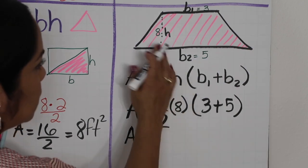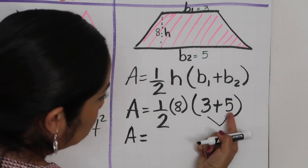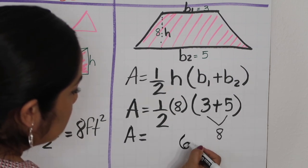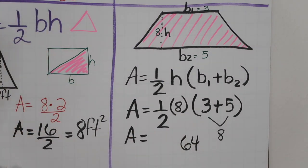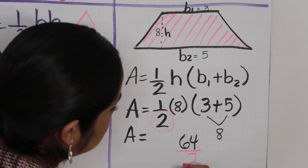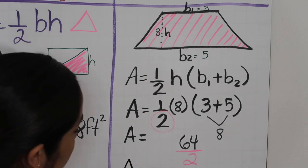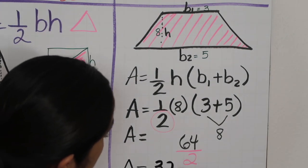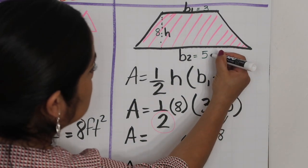Area equals: 3 plus 5 is 8, and 8 times 8 is 64. Then we divide by 64 by 2. So the area equals 32, and the units are square centimeters.